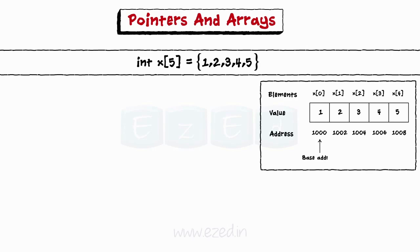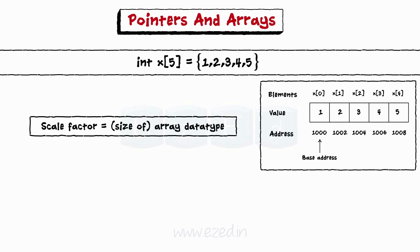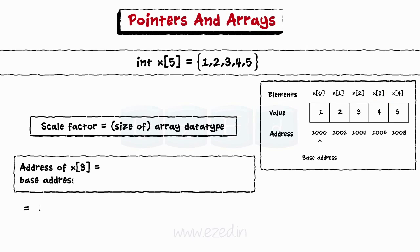If we know the base address of array, we can calculate the address of any of its element using its index and the scale factor. Scale factor means the size of array data type. For example, to find the address of x3 of the array x, we use the formula base address plus index of x3 into the scale factor of int. On substituting the values, we get the address as 1006.